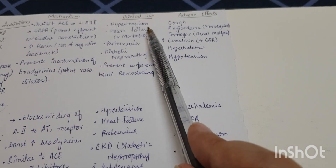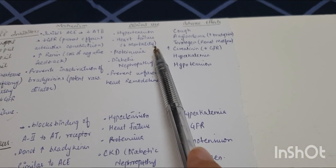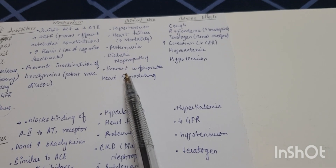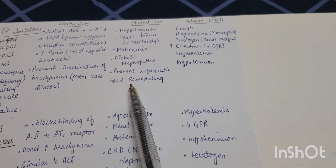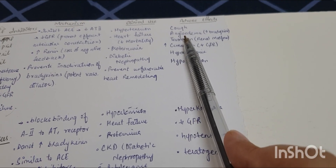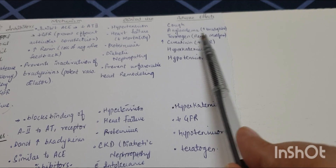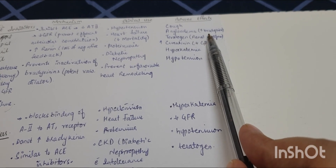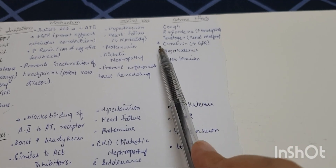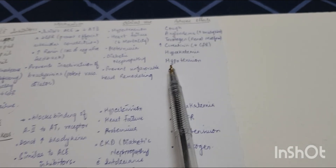Clinical uses of ACE inhibitors include hypertension, heart failure (decreases mortality), proteinuria, diabetic nephropathy, and prevention of unfavorable cardiac remodeling. Adverse effects include dry cough, angioedema (due to increased bradykinin), teratogenicity causing renal malformations, increased creatinine, decreased GFR, hyperkalemia, and hypotension.